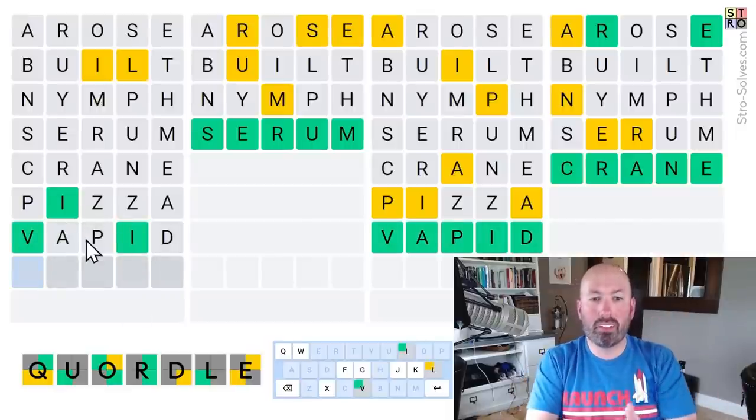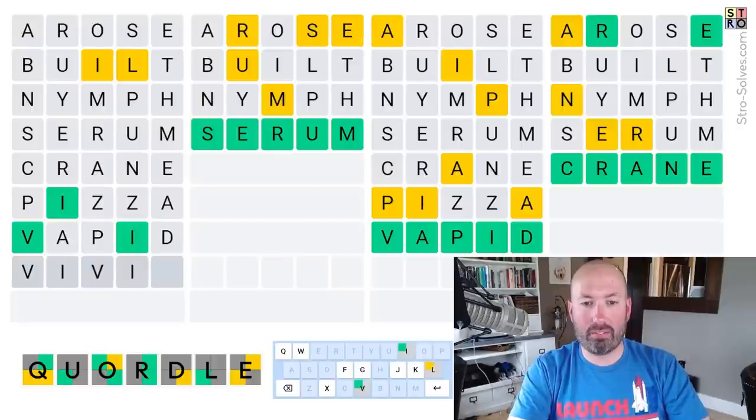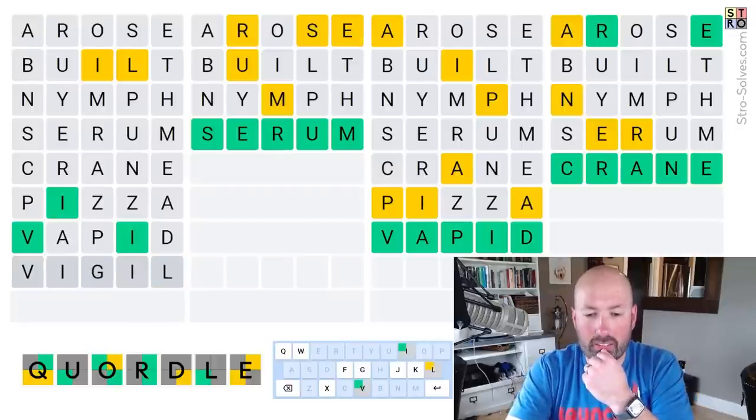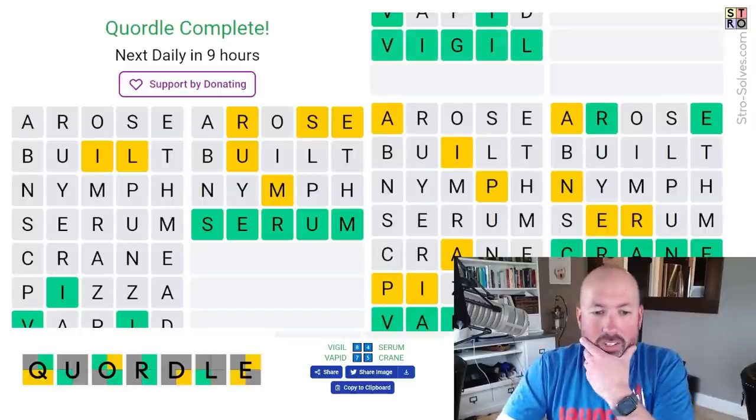Ooh, ooh, that helped a lot. Look at this. V-I, Vivid, no. Vigil. Vigil. We haven't used a G yet. Let's go with Vigil. Okay. Interesting.